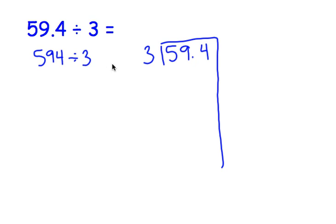So let's take out 100 groups of 3. 100 times 3 is 300. Subtract. That leaves us with 294.